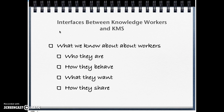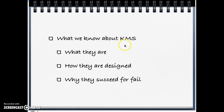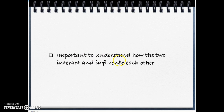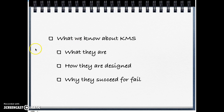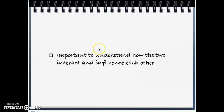The interface between knowledge workers and knowledge management systems is also important. You need to evaluate who your workers are, how they behave, what they want, and how they share. For knowledge management systems, consider what types they are, how they're designed, and why they succeed or fail. Critically, we need to understand how these two components interact and influence each other, and ensure information is accessible to employees so they can be more efficient and effective.